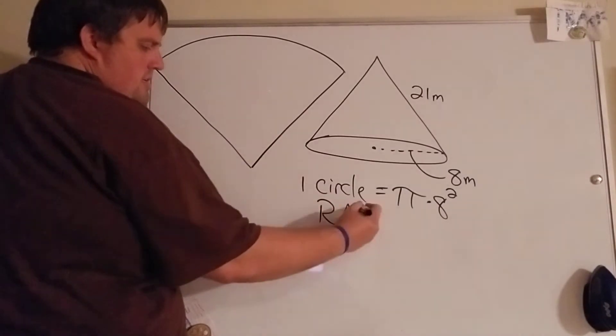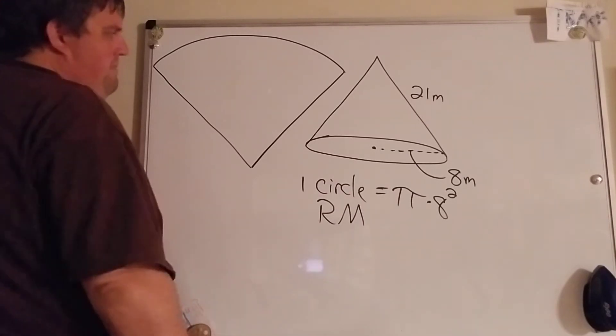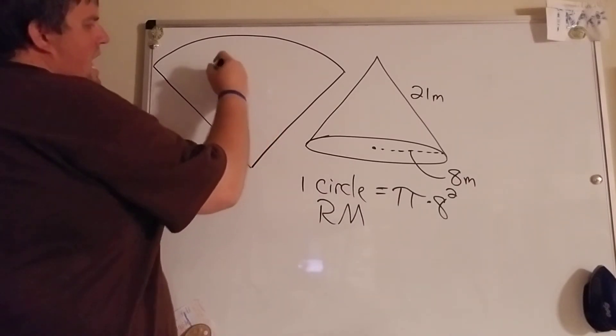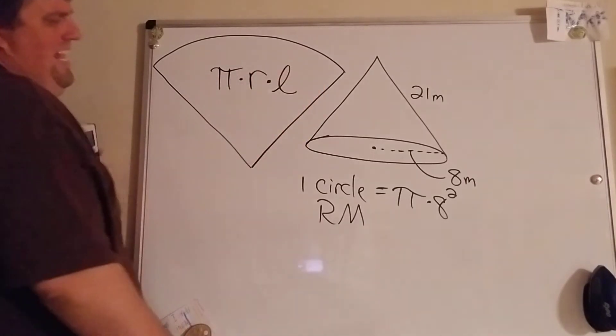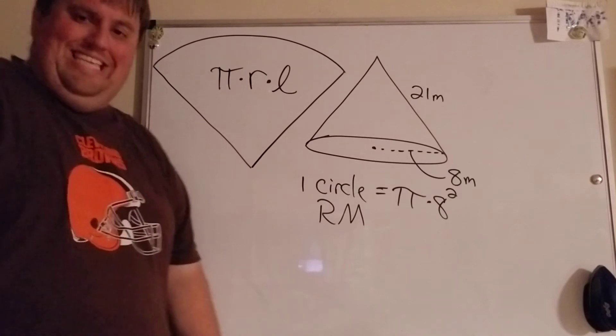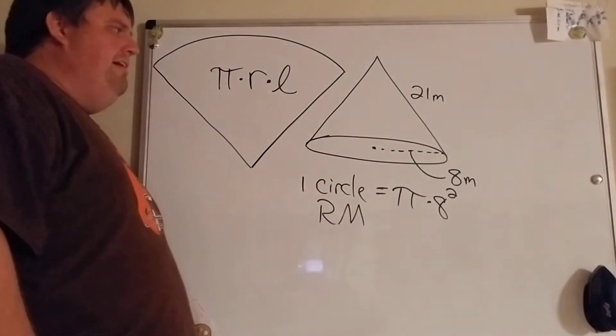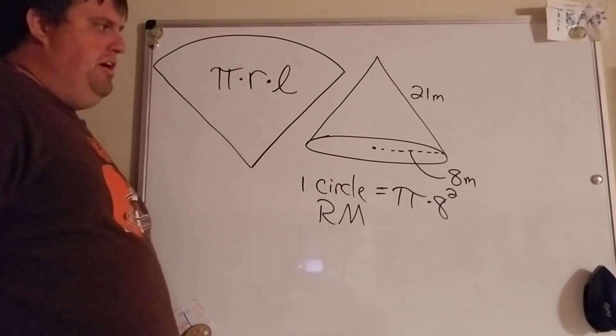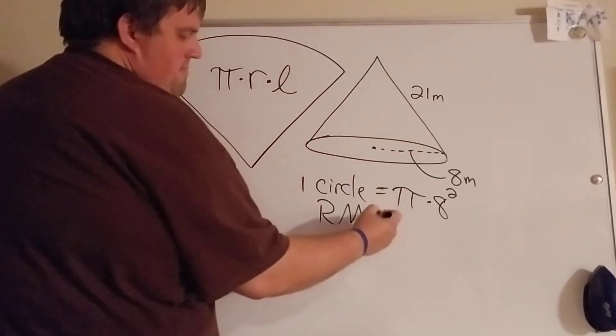To find the area of this thing I usually just call it the round middle. This thing is pi times the radius times the slant height, which is I don't know why it's L like length but it is pi r l. Pi times the radius times the slant height.